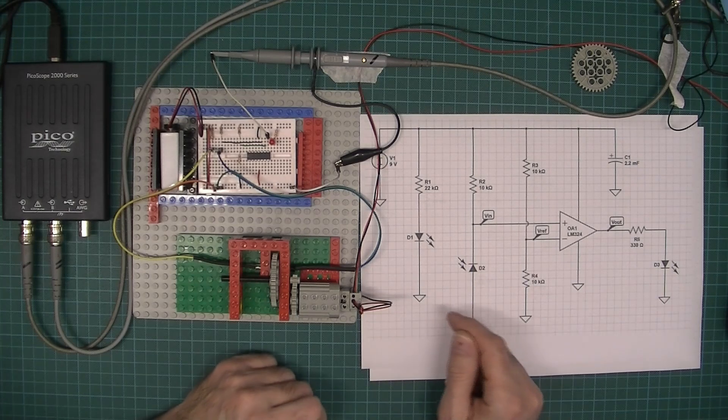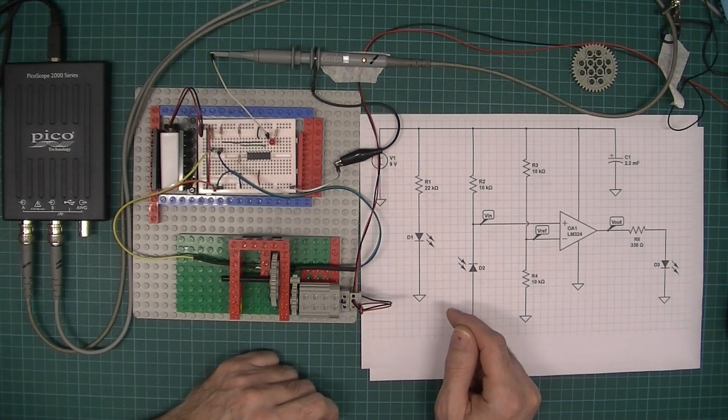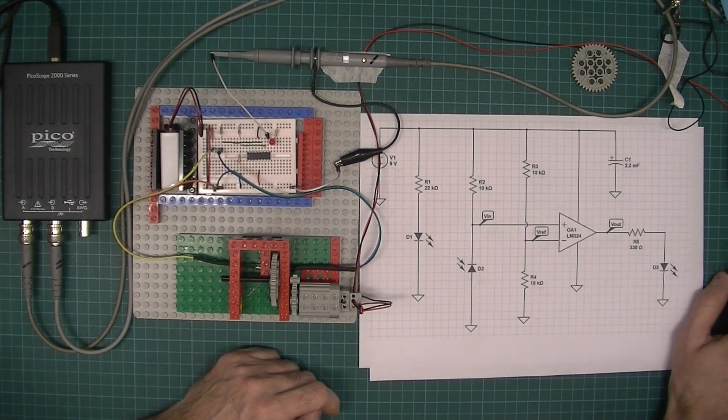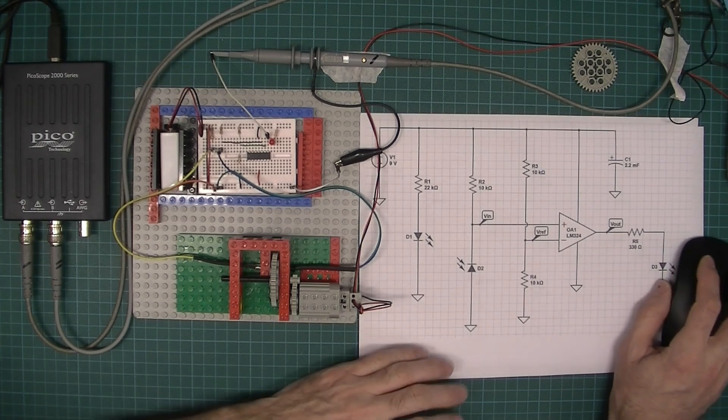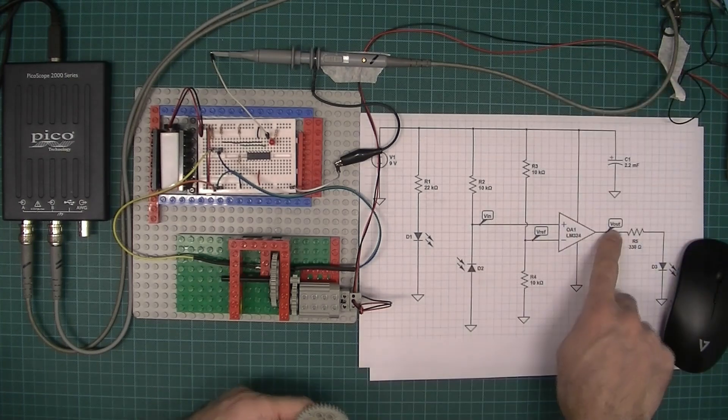I've got two channels enabled on the PicoScope software so I can monitor the voltage to the motor here and I can also monitor the frequency of the output here.